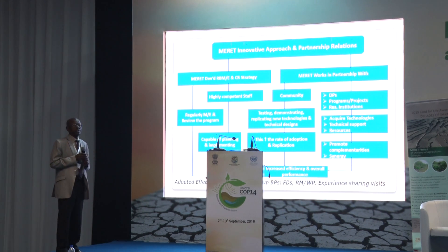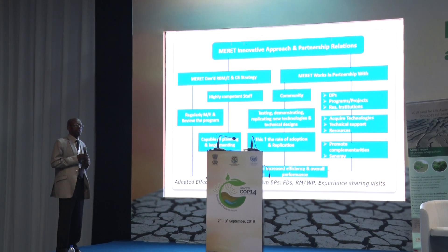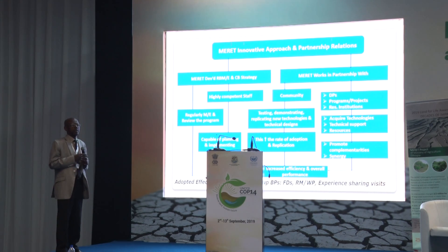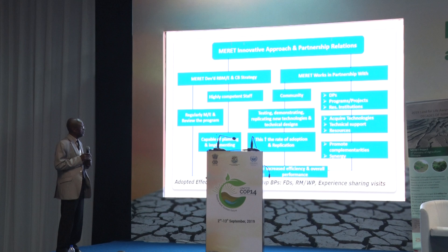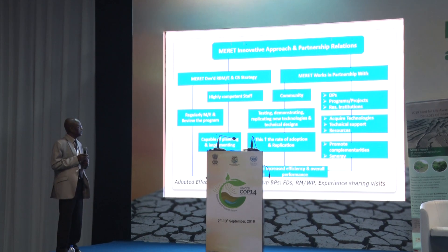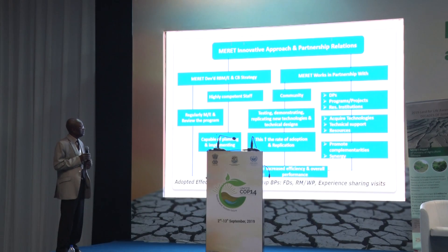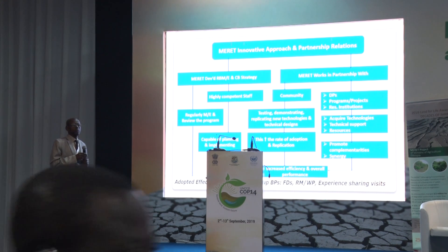Technical staff at the federal, regional, and local levels regularly monitor and evaluate project activities, and review the program with beneficiary communities to design strategies for improvement. This increases the efficiency and performance of the project. The project also adopted effective strategies for scaling up best practices, such as farmers' field days, review meetings and workshops, and field experience-sharing visits supported by practical field observation, all of which helped successfully scale up best practices at the field level.